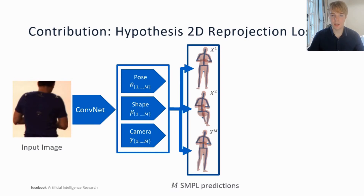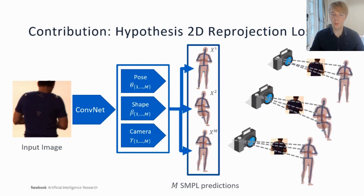Our final contribution is to overcome a common challenge related to training min-of-M models with large values of M. In this case, the backpropagated gradient is very sparse and we observe that some modes die off and are never used to represent the best hypothesis. We can discourage mode degeneration by applying a 2D reprojection loss across all hypotheses, which helps ensure that the predictions remain consistent with the input image.